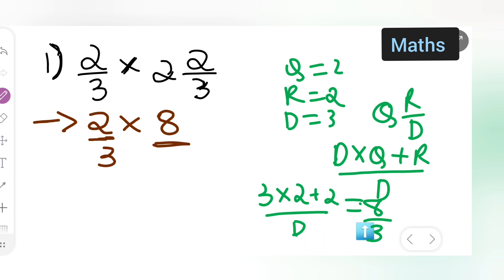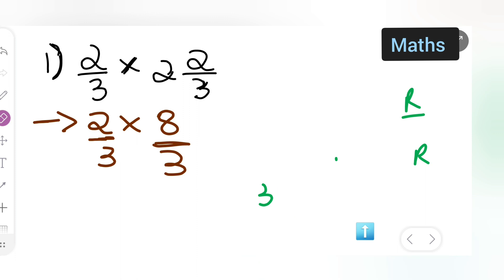You can write down 8/3. You all can cancel anything from this? No. Let me rub this rough part. Now this is going to give you 2 times 8 are 16, 3 times 3 are 9. You get 16/9.